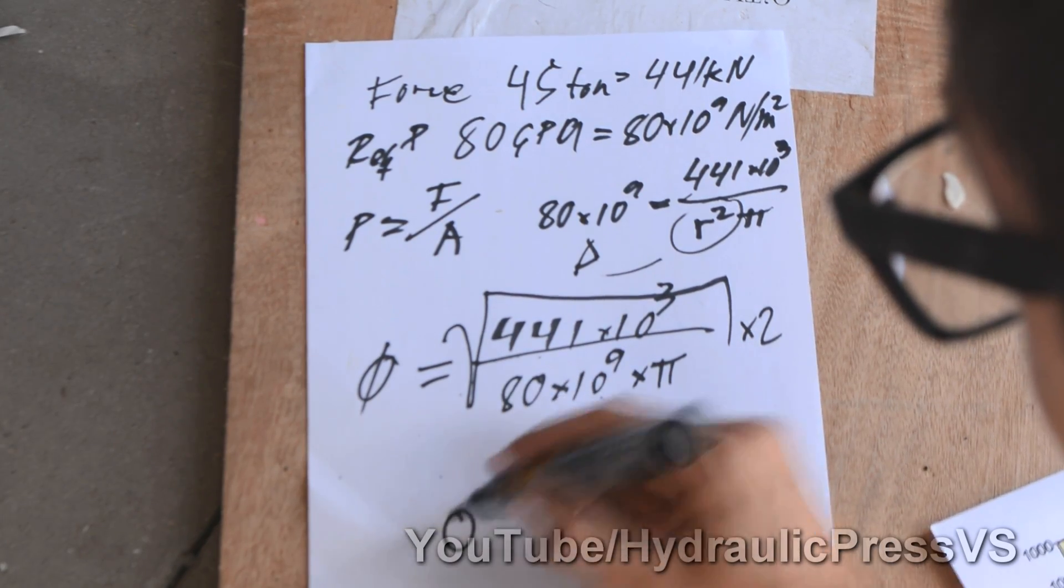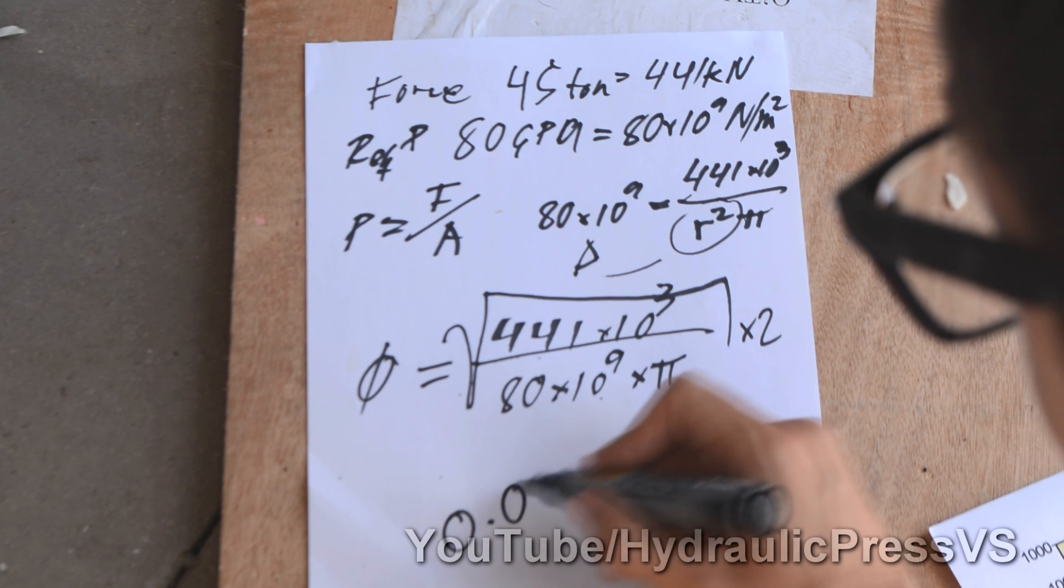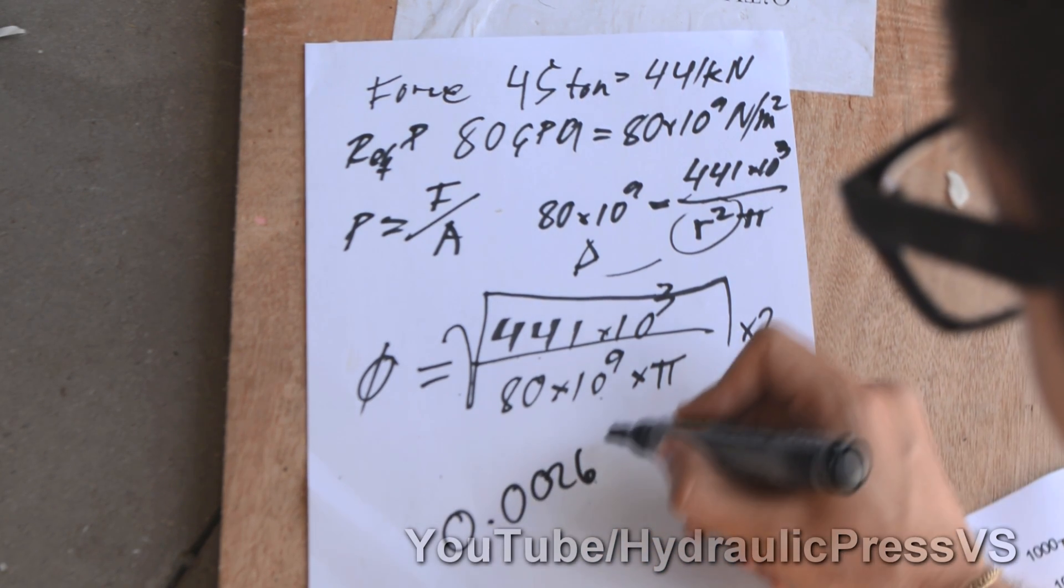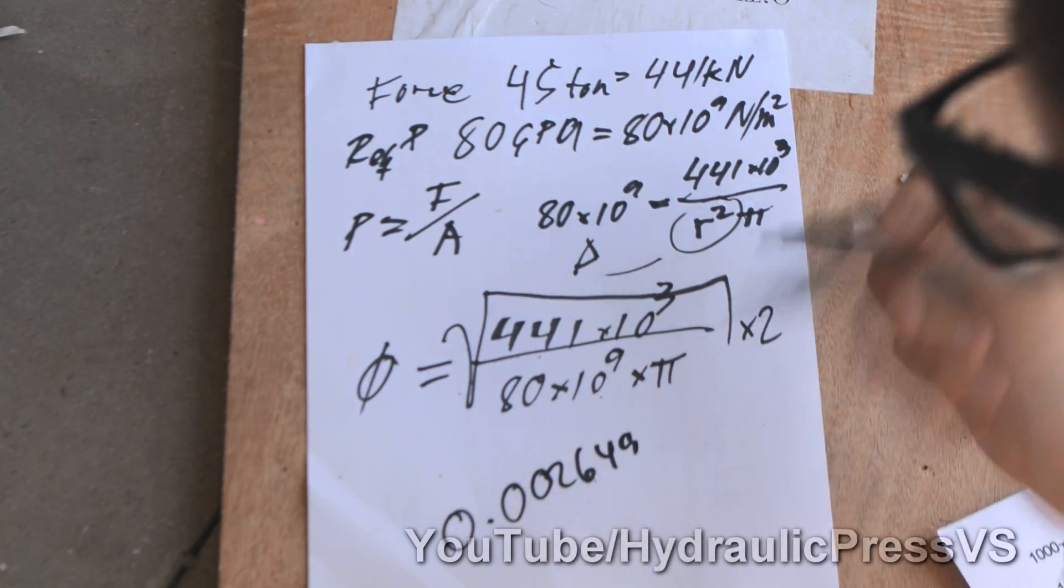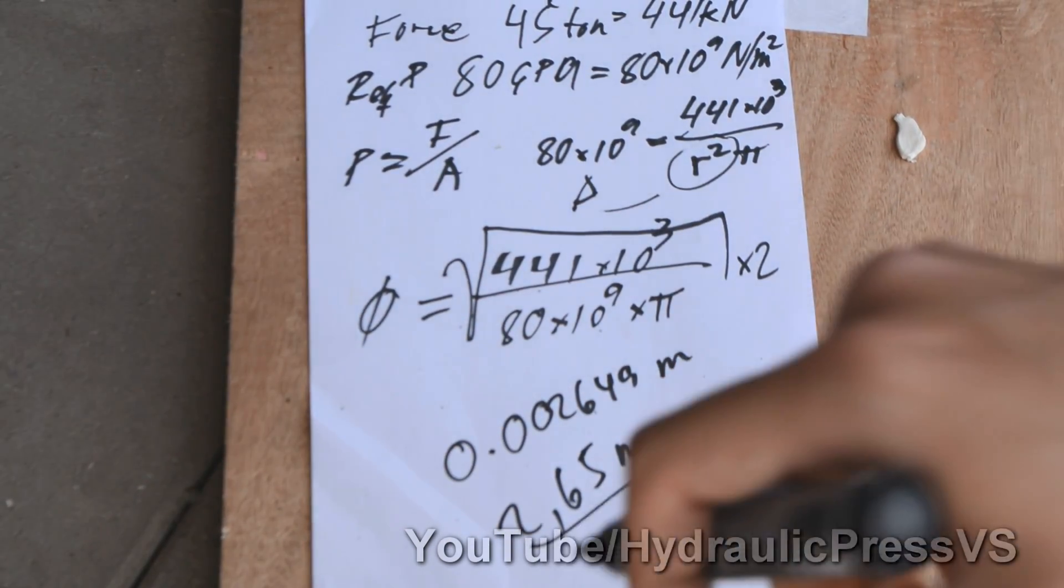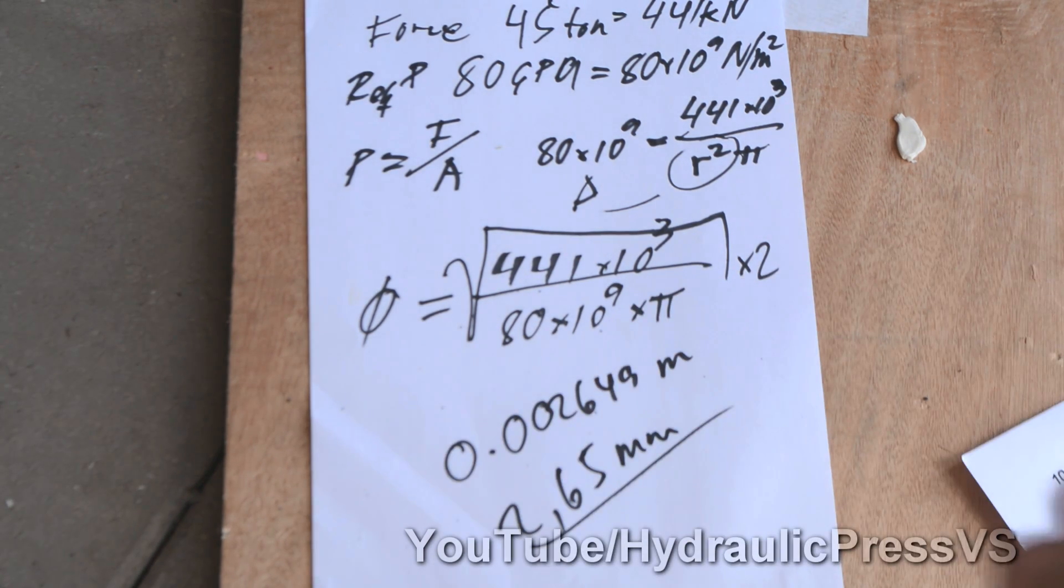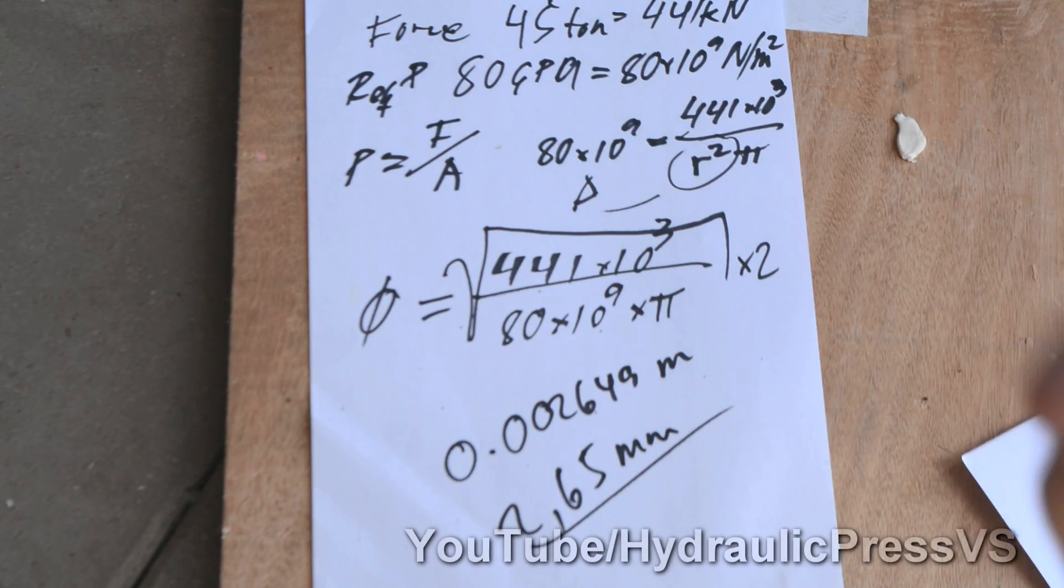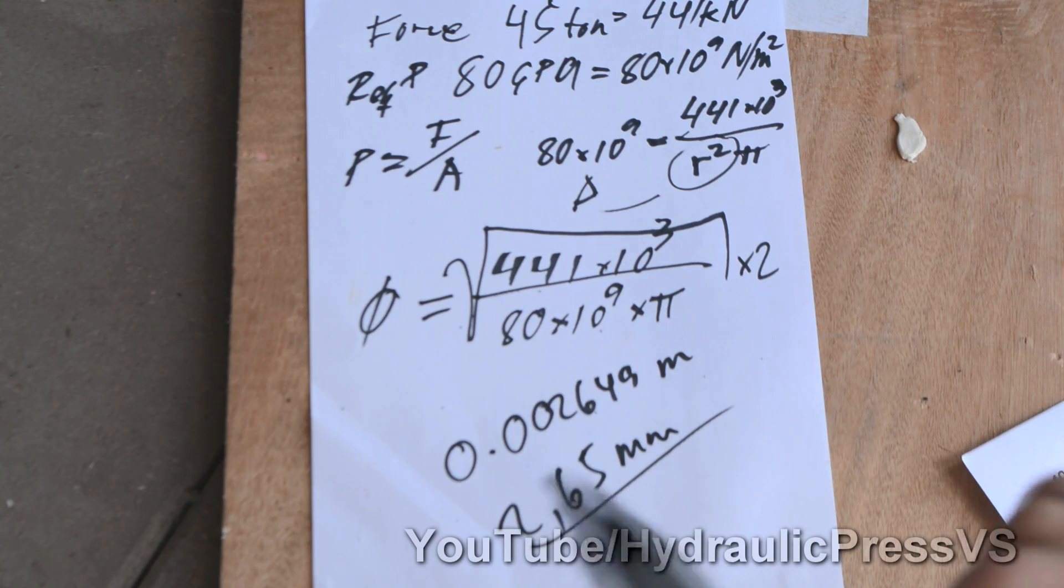So the answer to this is 0.002649, 2.65 millimeters. So this is the diameter that we need for the cylinder to get this pressure. This is science bitch.